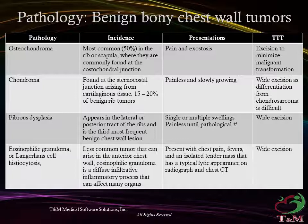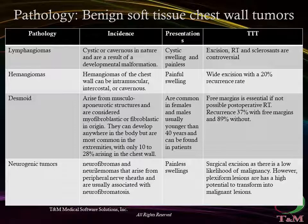Presentation of fibrous dysplasia may be as an asymptomatic mass in the posterior aspect of a rib. It appears as a lytic lesion on chest radiograph with a soap bubble or ground glass appearance that is diagnostic. Eosinophilic granuloma, or Langerhans cell histiocytosis, is a less common tumor that can arise in the anterior chest wall. Treatment is wide local excision both for diagnosis and symptomatic relief. The soft tissue tumors affecting the chest wall have similar variability in pathology as bone-based lesions.